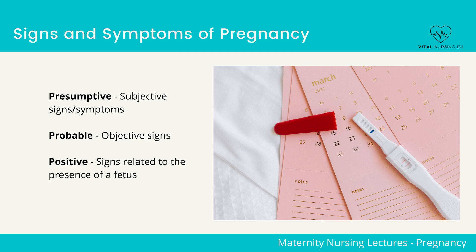Chadwick's sign — this is a deepened violet-bluish color of the vaginal mucosa secondary to increased vascularity of the area. Goodell's sign, which is a softening of the cervical tip.